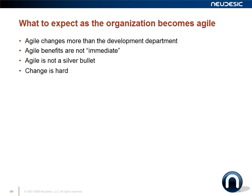Agile also changes more than just the development environment. It may start with the development department, but in order for it to be successful, it requires high investment and involvement by your business analysts and business owners to provide guidance, direction, and vision for what the team is producing. Many times this business involvement becomes one of the largest impediments to overcome. Business users are not used to being asked what they want other than during the upfront requirements phase, so shifting them from participating only up front and at the end to being involved on a daily basis requires significant change.